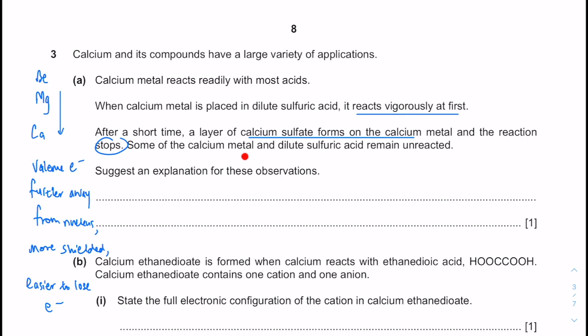Some of the calcium metal will remain unreacted because they are not exposed to the acid anymore. I'll suggest an explanation for these observations — there's plural. First of all, I'll talk about the vigorous reaction: initial vigorous reactions.